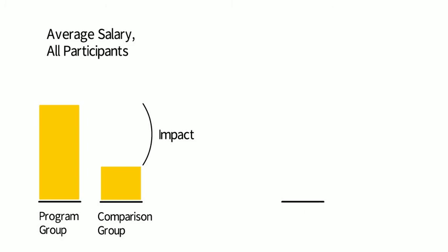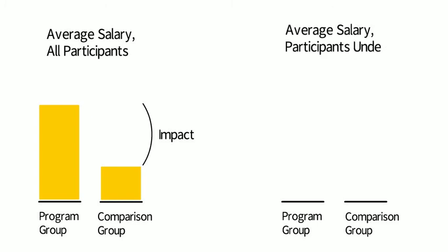A random assignment study can sometimes show whether the program is particularly effective for certain segments of the population. For example, we could look specifically at everyone in the program group and the comparison group who is under the age of 30. How much of a difference does the program make for this population?